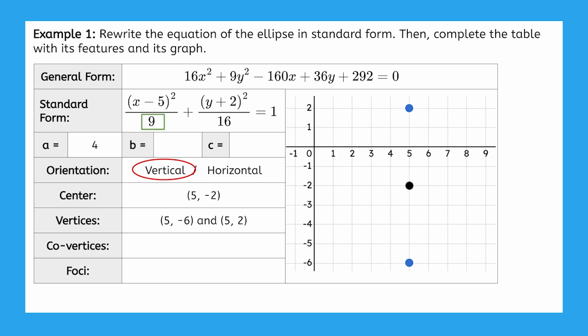Since 9 is the smaller denominator, the minor radius is 3, landing our covertices 3 units left and right of the center at 2, negative 2 and 8, negative 2.